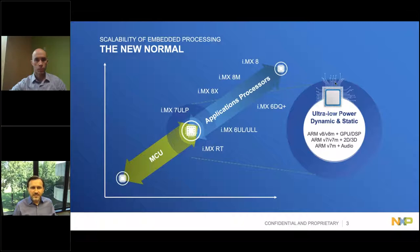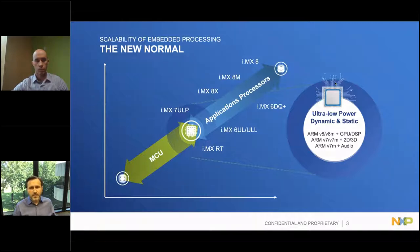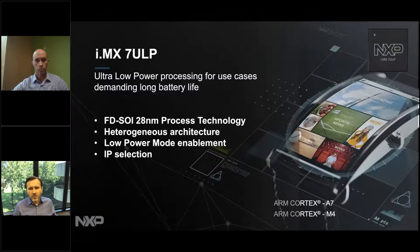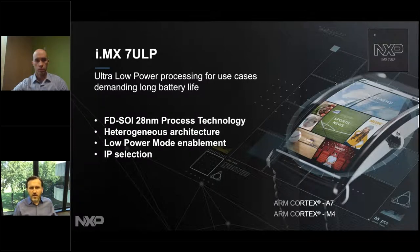For the MCU world, this gives them the ability to have rich graphics like you see on cell phones. For application processor designs, it allows them to come down into low-power applications. How do we achieve low power with the i.MX 7ULP? We achieve it through several ways. First, we pick the right process technology: fully depleted silicon on insulator, 28-nanometer process. Next, we designed the heterogeneous architecture to maximize power efficiency.